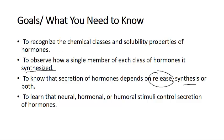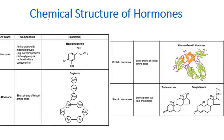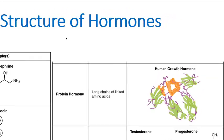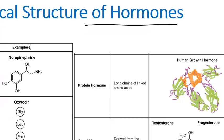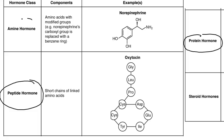Let's begin with the chemical structure of hormones. Based on their features, hormones can be divided into four different classes: peptide hormones, protein hormones, amine hormones, and steroid hormones.